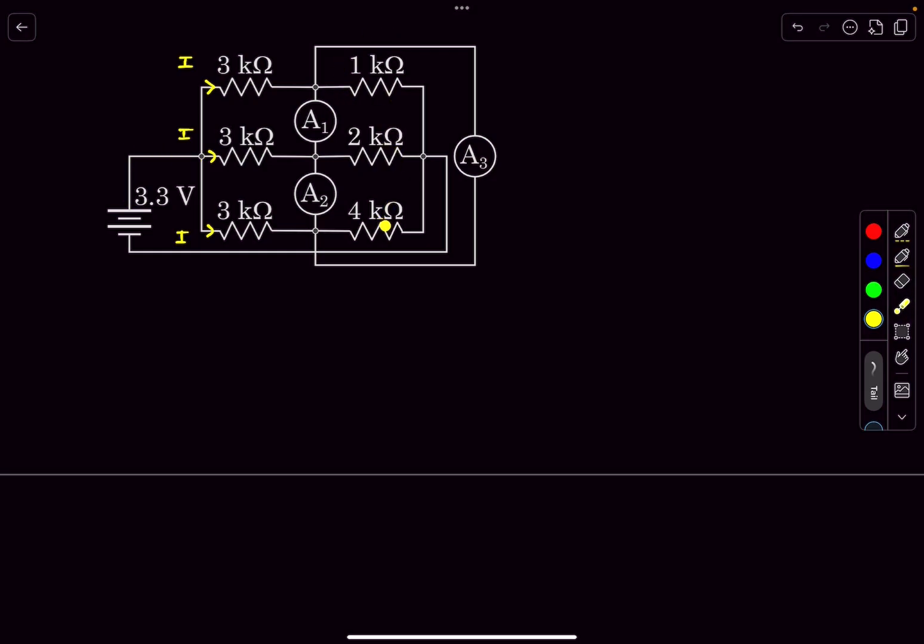So I'm just going to say for now that the current here is x, so the current here will be x by two and the current here will be x by four. Once again to maintain i into R constant.